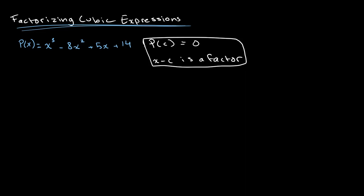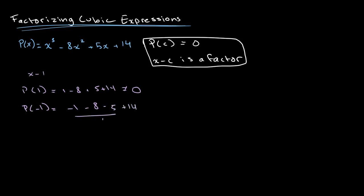To find our first factor, we guess and check different values. For example, we try p(1), which gives 1 − 8 + 5 + 14, not equal to 0. Then we try p(−1), which gives −1 − 8 − 5 + 14 = 0. Therefore x + 1 is a factor.